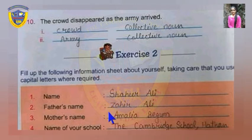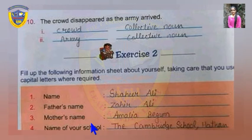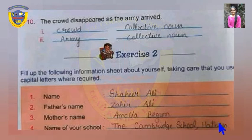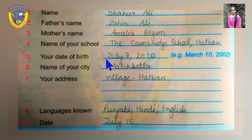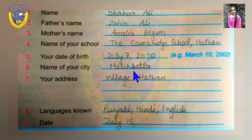For your father and mother's name, write the first letter of both the first name and surname in capital. For the name of your school, write capital T in 'The', capital C in 'Cambridge', capital S in 'School', and capital H in 'Hathana'. For your date of birth, write the month name with the first letter in capital, then the date and year. For your city name — if you live in a city like Turi, write your city name; if you live in a village, write the nearest city name, like Malerkotla.